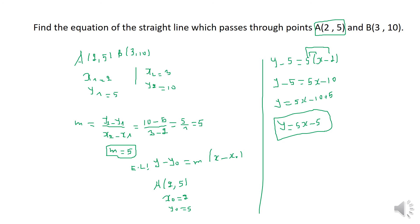If you have two points and are asked to find the equation of a line, first find the gradient between the two points, then select one of the points and use the formula to find the equation of the line. Thank you for watching. If you like it, don't forget to subscribe, like, share, and comment. Bye bye.